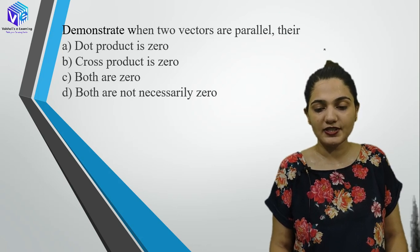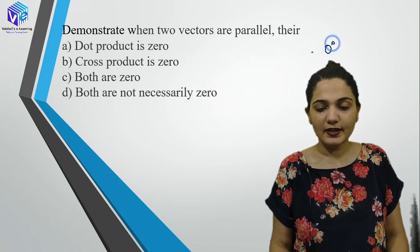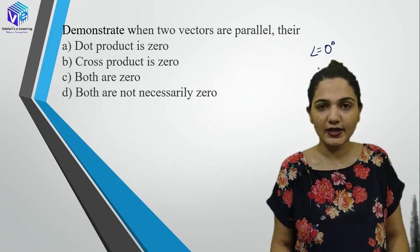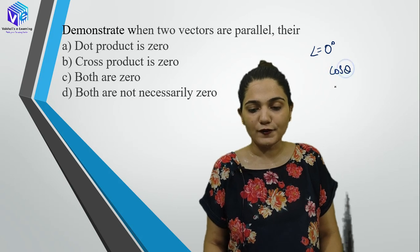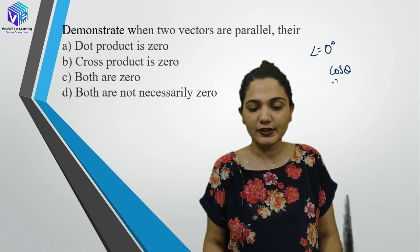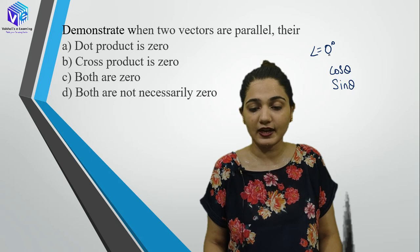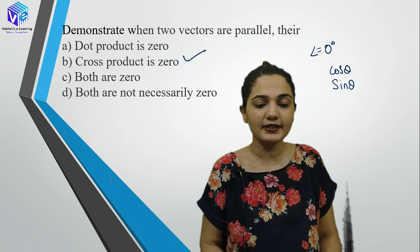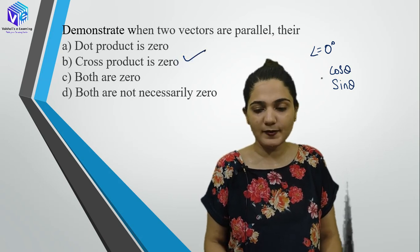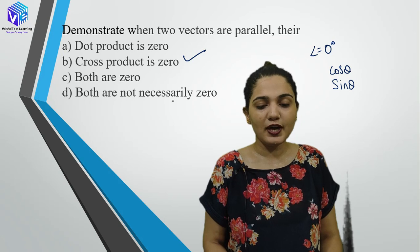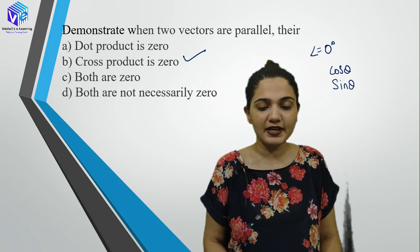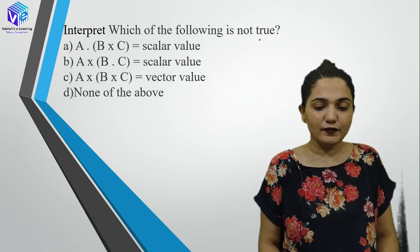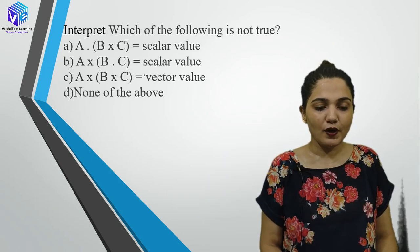Demonstrate when two vectors are parallel: the angle between them is 0°. Dot product = |A||B|cosθ, cross product = |A||B|sinθ. When θ=0, sin(0)=0 so cross product becomes 0, but cos(0)=1 so dot product is not zero. Therefore both are not necessarily zero — this statement is false since cross product becomes 0.